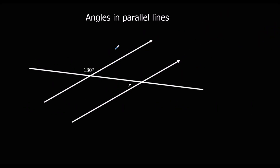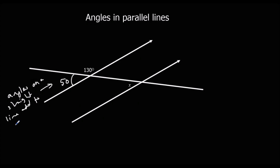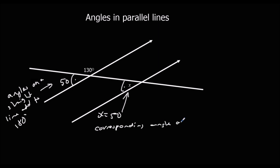Here's a different example. We've got 130 degrees and we want to find x. One approach: angles on a straight line add to 180, so this angle is 50 degrees. Then we've got corresponding angles, so x is 50 because these two are the same — they're corresponding, and corresponding angles are equal.